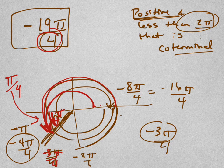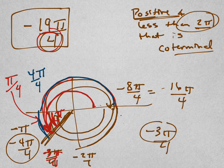I'm going to have to change colors again so you can see it. What's the angle from here to here is π, or 4π over 4, if I get common denominators, plus another 1π over 4 is 5π over 4.